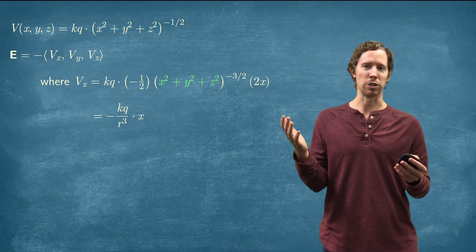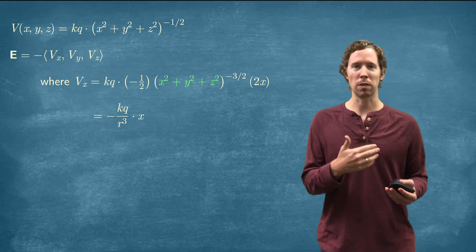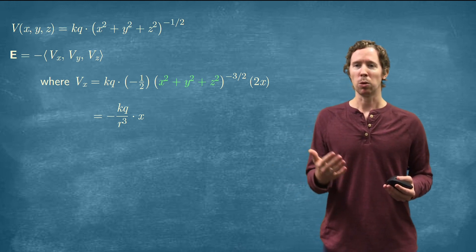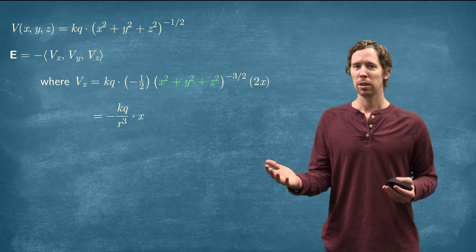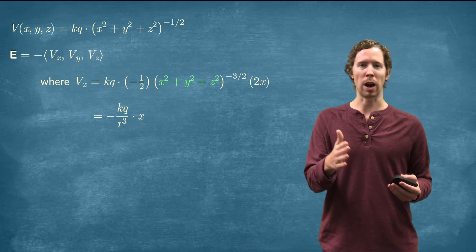Notice the two negatives will cancel each other out. Also notice that if we take the partial derivative with respect to Y or Z, we'll get something very similar. The only difference will be that at the end, we'll have a two times Y or two times Z.